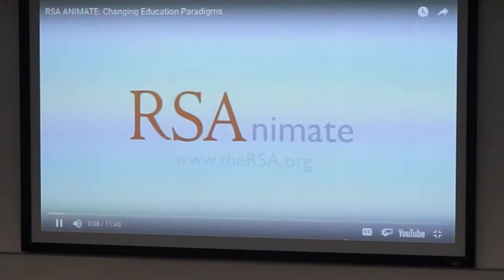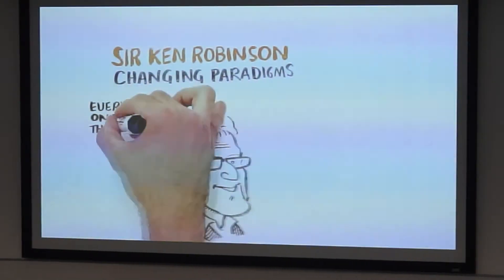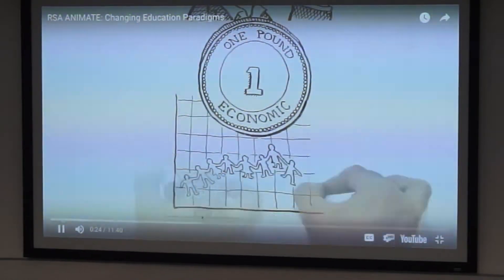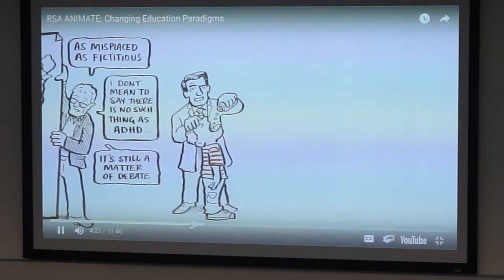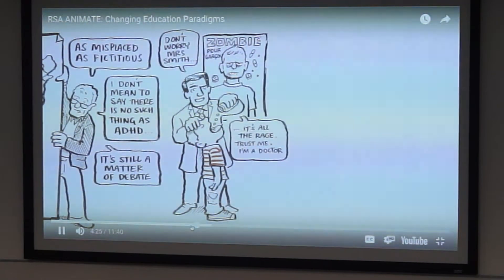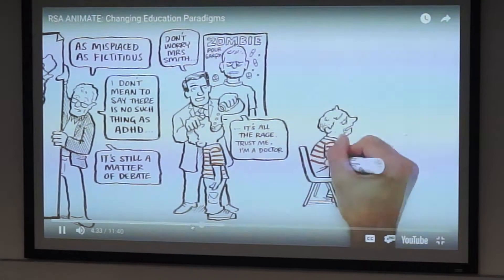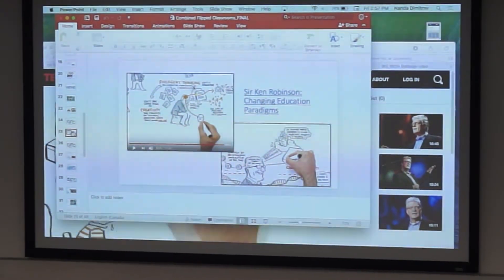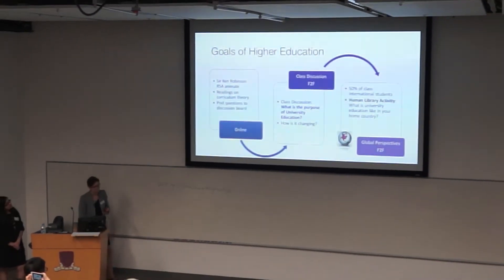When we engage students in conversation about changing educational paradigms, this is a fantastic video — Sir Ken Robinson has given a number of TED talks. We expose our students, who are going to be future faculty, to this thought-provoking 11-minute video on the purpose of higher education: how education is changing, why we educate students in batches by age rather than by ability, and how we are recognizing needs for accommodation. Students are responsible for watching it, and then we have a conversation in class about the purpose of university education.